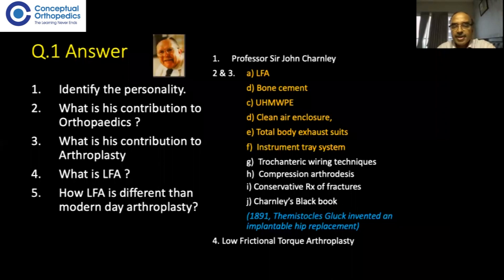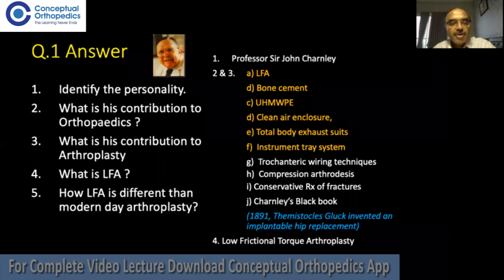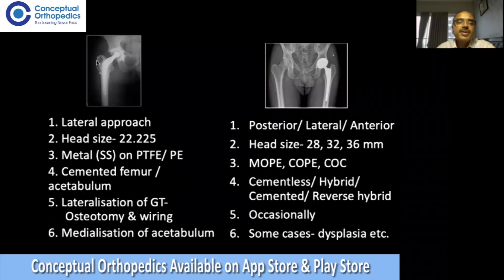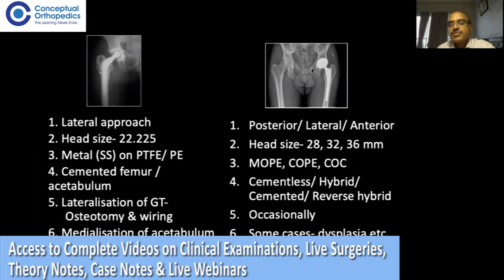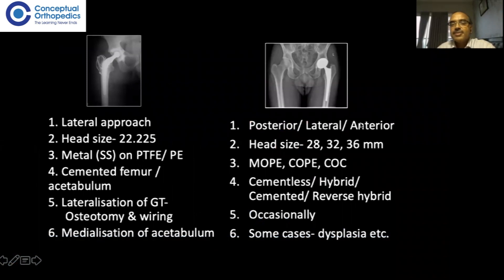LFA stands for Low Frictional Torque Arthroplasty — though writing 'low friction arthroplasty' is also acceptable. Now, how is LFA different from modern-day arthroplasty? This X-ray shows the classical Charnley low friction arthroplasty, and this is modern-day arthroplasty. Charnley used a lateral approach, whereas modern-day arthroplasty uses a posterior approach, a lateral approach, or, most recently, the anterior approach to the hip.